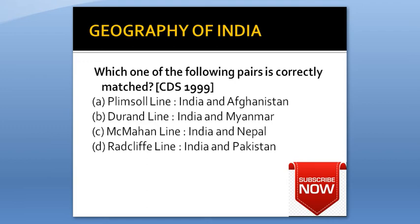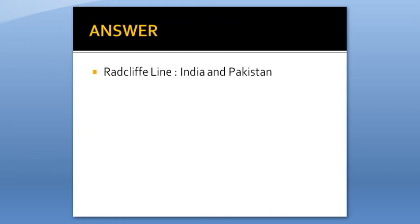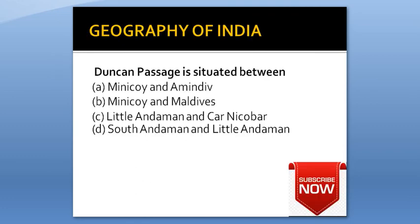Which one of the following pairs is correctly matched? Option A: Plimsoll line - India and Afghanistan. Option B: Durand line - India and Myanmar. Option C: McMahon line - India and Nepal. Option D: Radcliffe line - India and Pakistan. Answer is Radcliffe line - India and Pakistan.